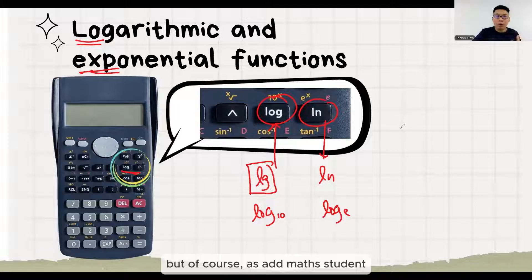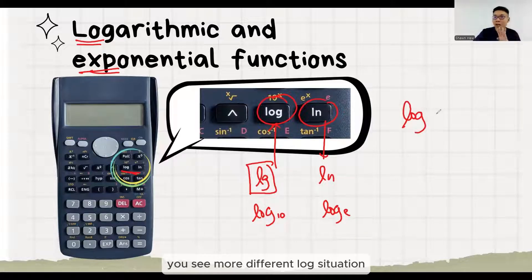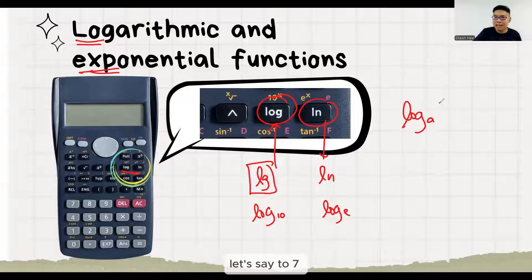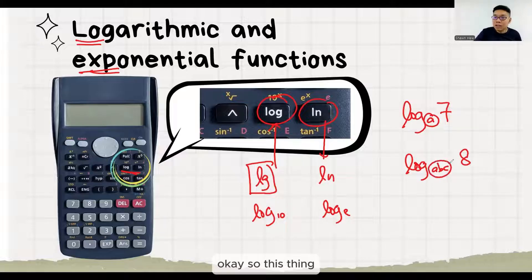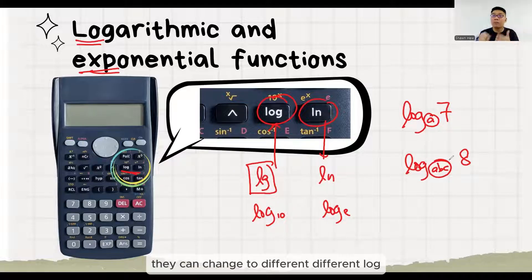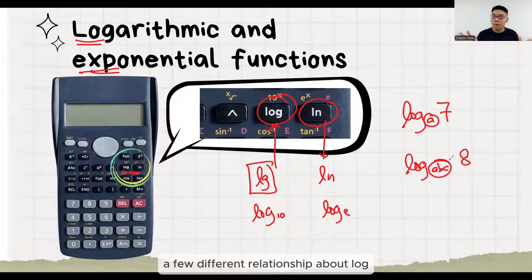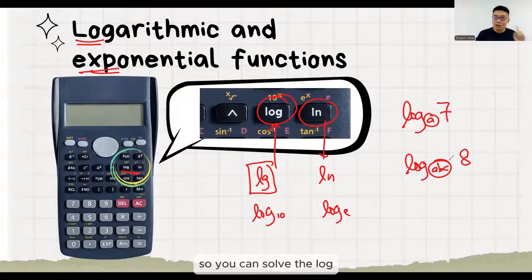But of course, as an MS student, you will see more different log situations, which you can see log base A to 7, log base A, B, C to 8. So, this thing they can change to different log. That's why we need to know a few different relationships about log so you can solve them.